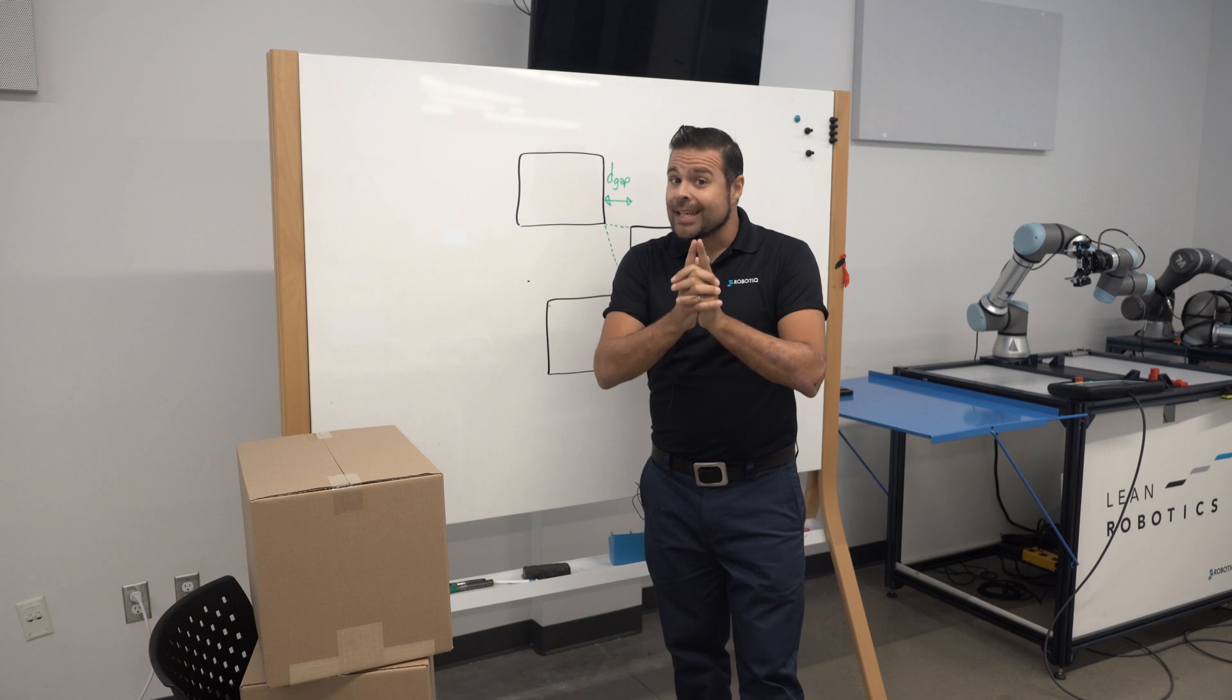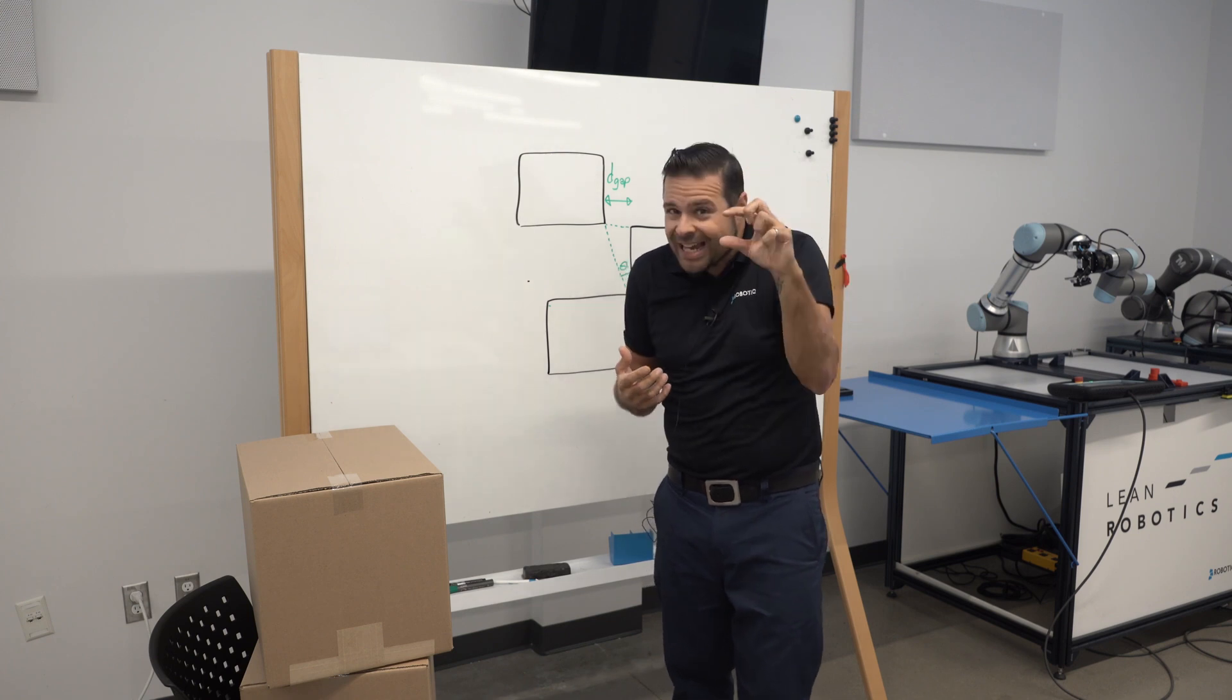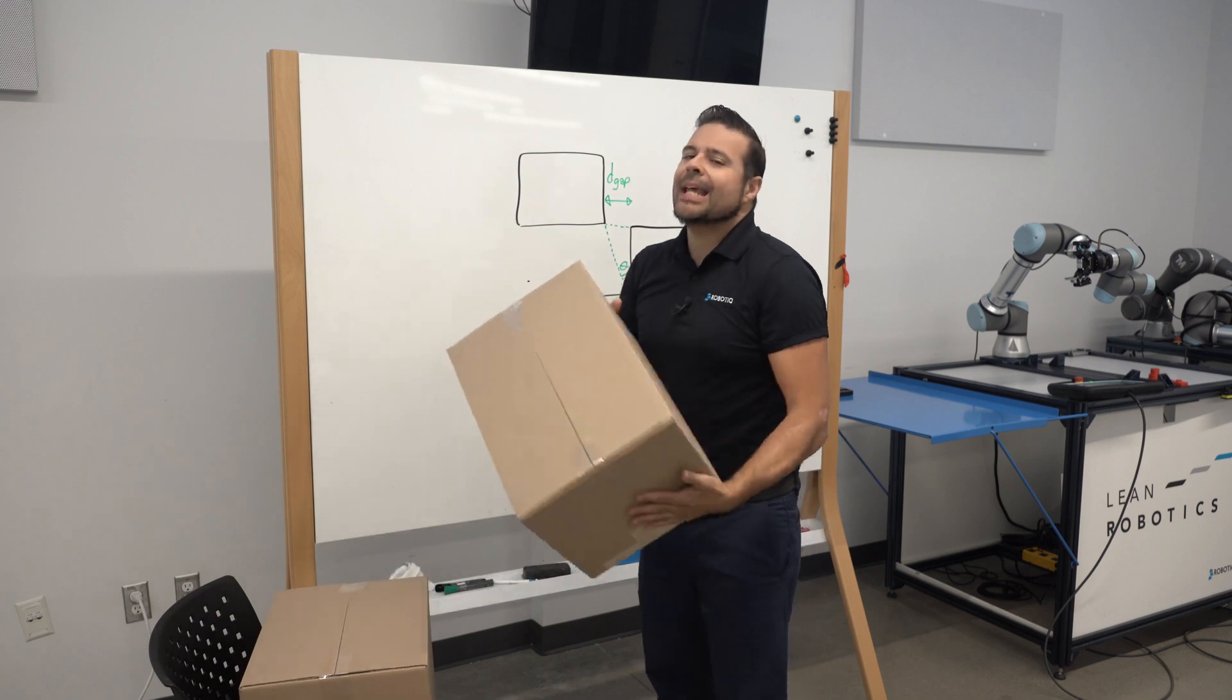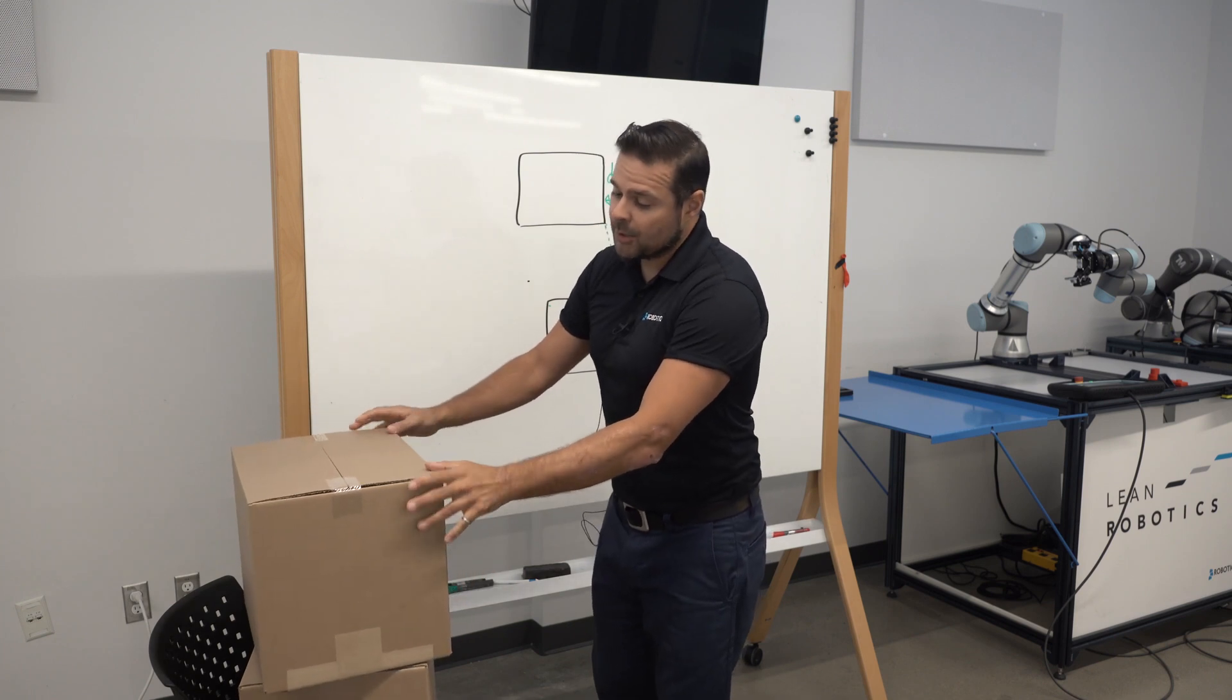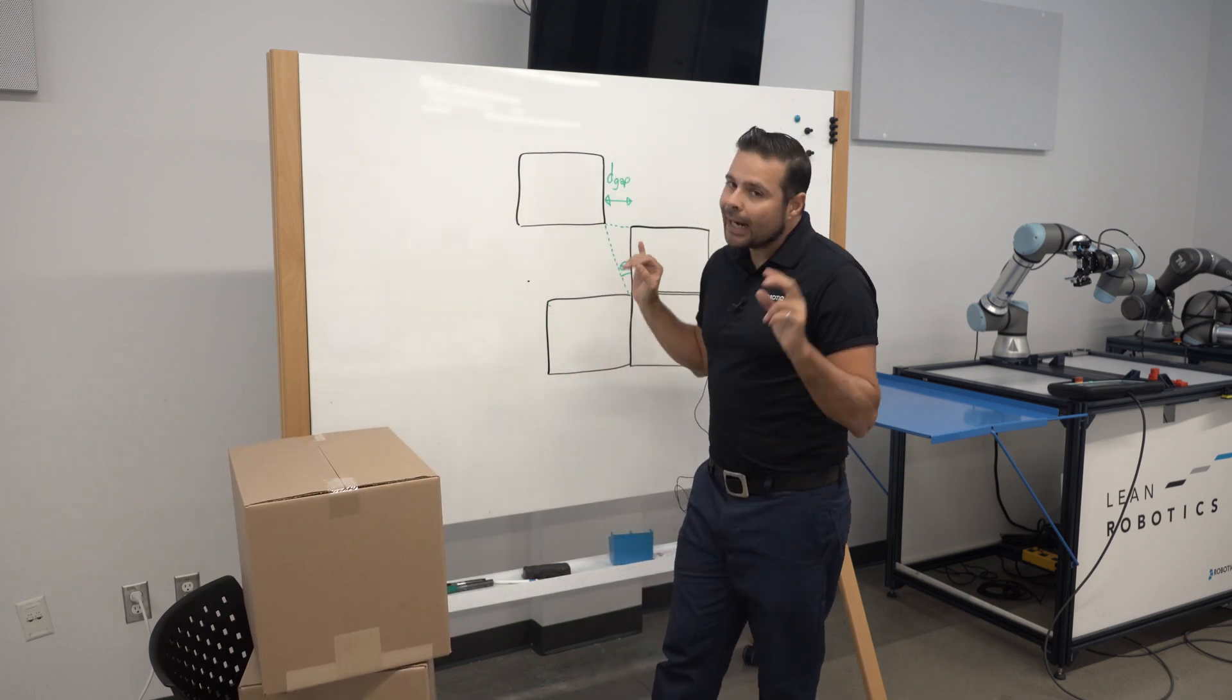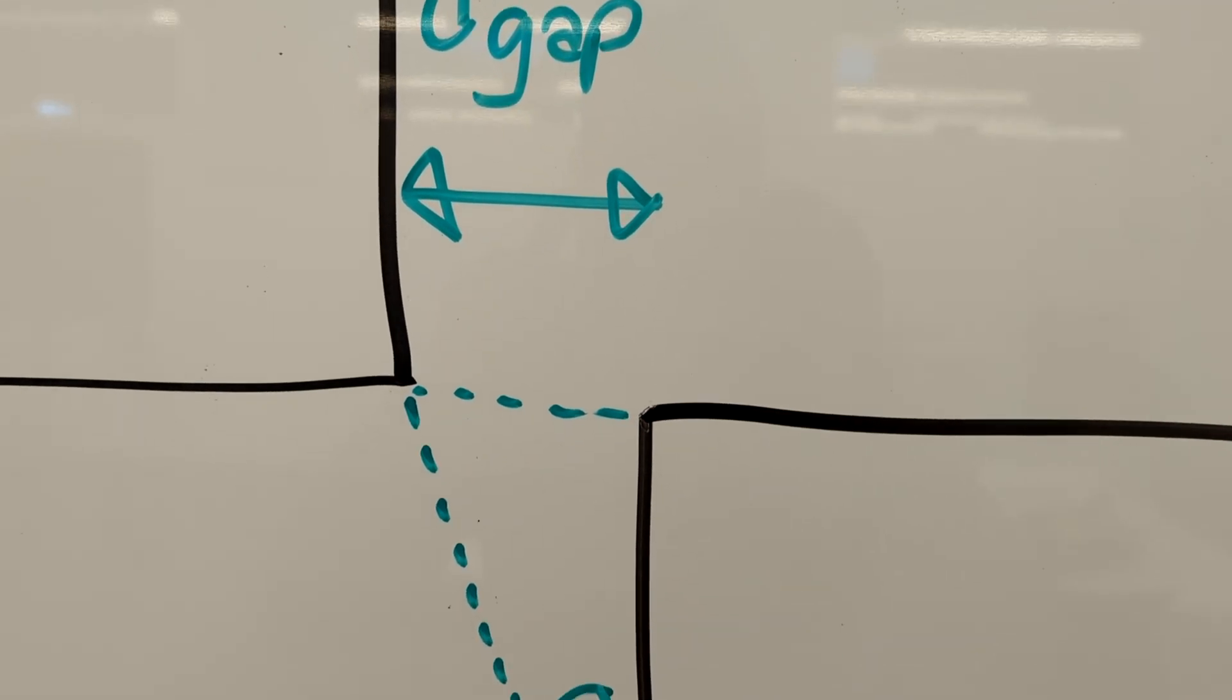So this can be problematic if you're looking at boxes that have a very small height, or if they're not exactly square, and we know that this happens. This is why we have created a new feature that allows you to change not the angle, but the actual approach distance as an absolute distance, as a gap.